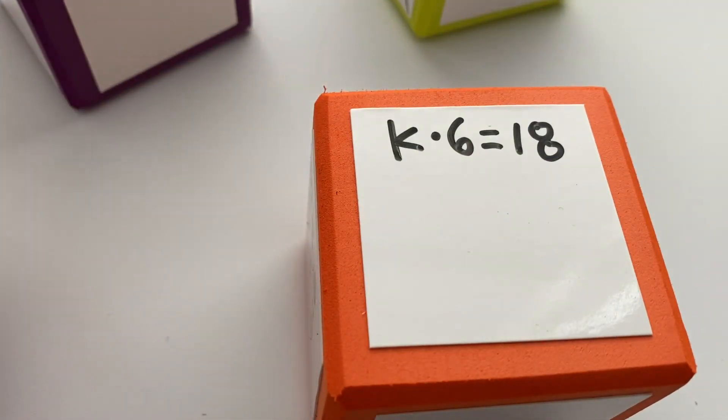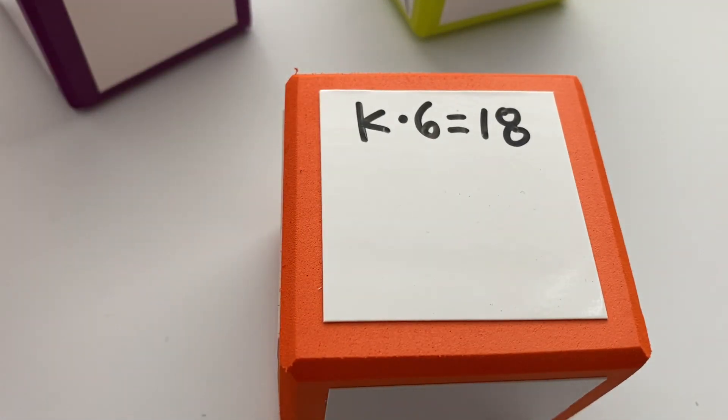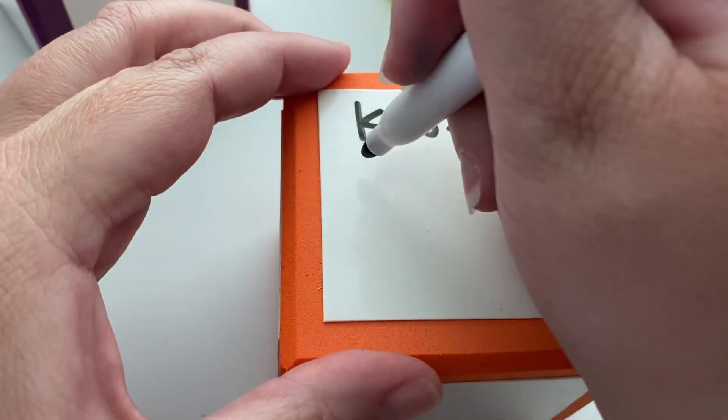Let's look at another one: k times six equals eighteen. What's the inverse operation of multiplying? That's right, dividing. We'll use our fraction bar for dividing and divide by six.